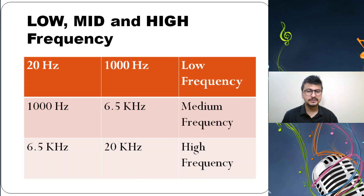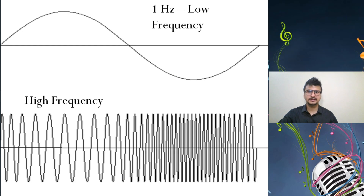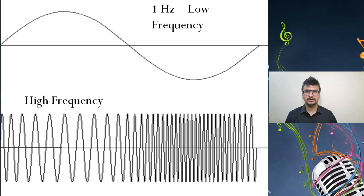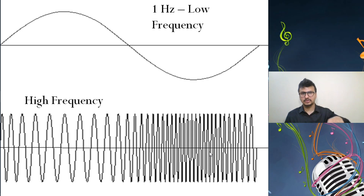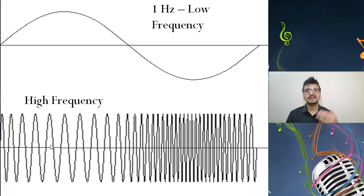Two graphs here give a comparative analysis of high and low frequency. The first graph shows one hertz — one single cycle — that is low frequency. The graph below shows high frequency, where the number of cycles is more. More cycles means more frequency — more ups and downs. In simple language, more cycles happening again and again means high frequency.